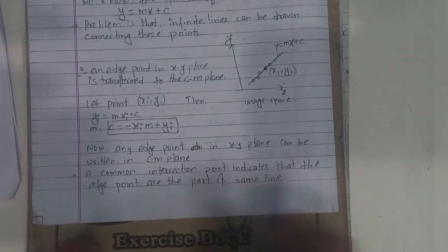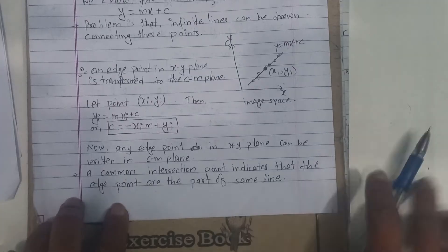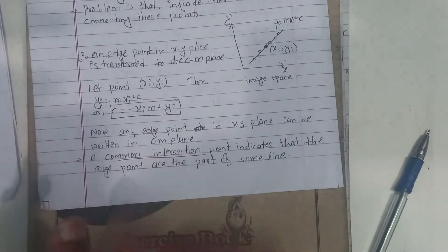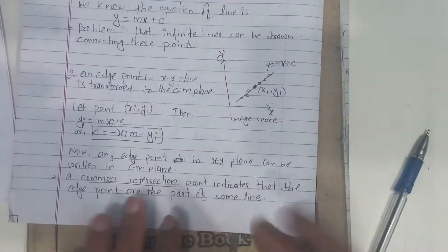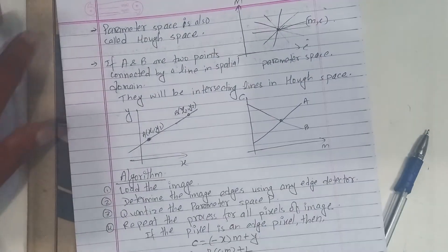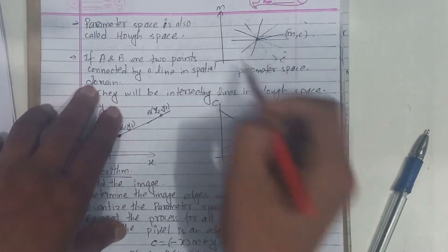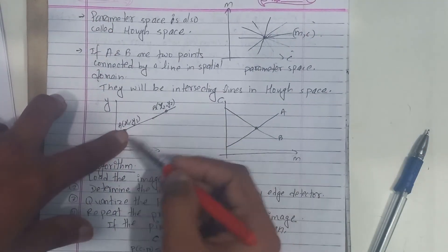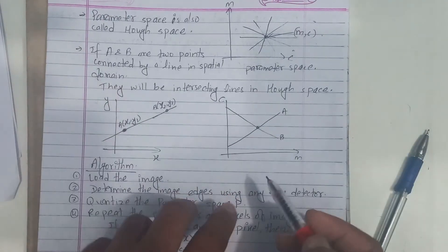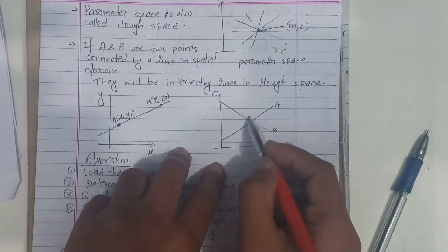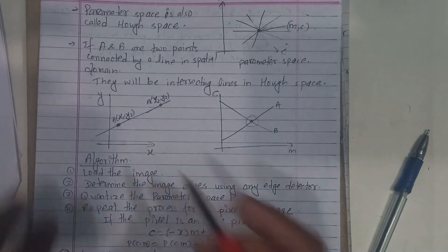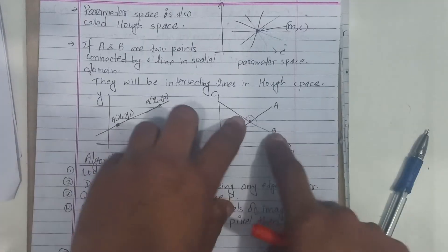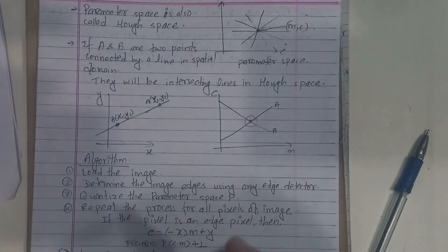A common intersection point in parameter space indicates that the edge points are part of the same line. The parameter space is also called Hough space. If A and B are two points connected by a line in the spatial domain, there are two points mapped in Hough space, and their corresponding lines will intersect in Hough space. We set up Hough space and find where the lines intersect, so that disconnected points are connected.